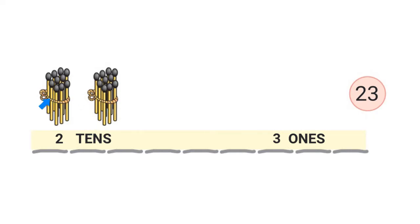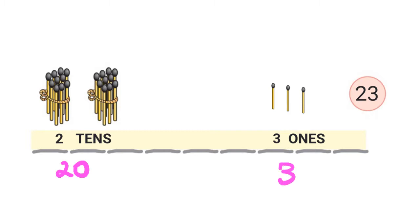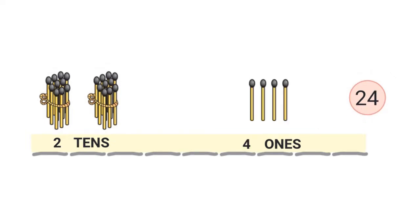I have 2 tens which is 20, and I have 3 ones. Let me draw 3 ones: 1, 2, 3. So I have 20 and 3 — that's 23. Here I have 2 tens which is 20, and I have 1, 2, 3, 4 — that's 4 ones. So I have 20 and 4 — 24 matchsticks.